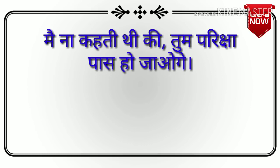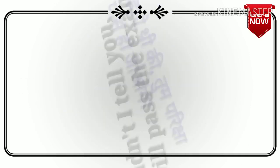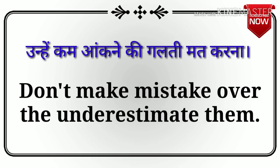जैसे कि हम बोलते हैं — मैं ना कहती थी कि ऐसा होगा? या फिर — मैं ना कहती थी कि वो आएगा? या फिर — मैं ना कहती थी कि आज बरसात होगी? इस sentence का English translation है — Didn't I tell you you will pass the exam? Next sentence: उन्हें कम आँकने की गलती मत करना. — Don't make the mistake of underestimating them.